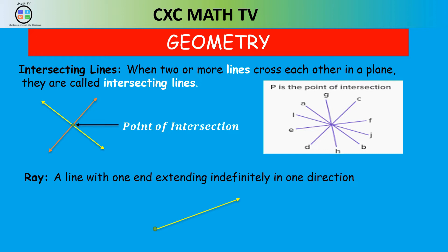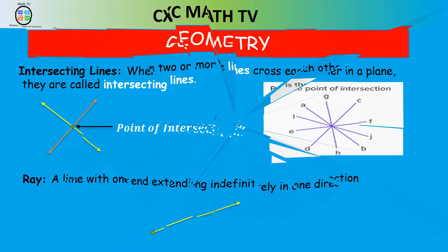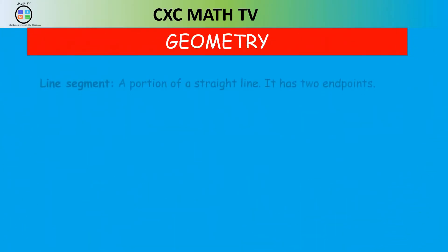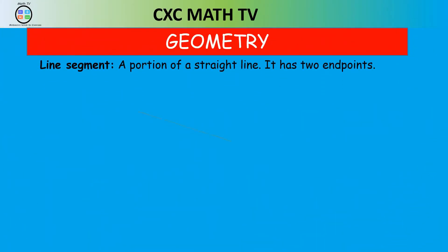Next is a line segment. A line segment is just a portion of a line and it has two endpoints. As we can see in the diagram, the two endpoints are A and B.